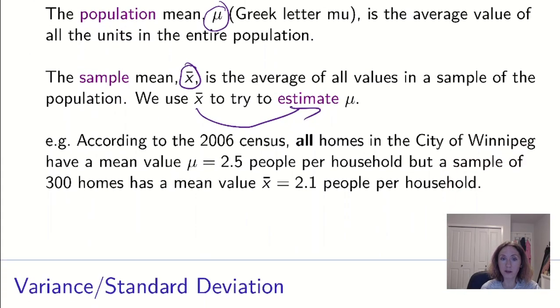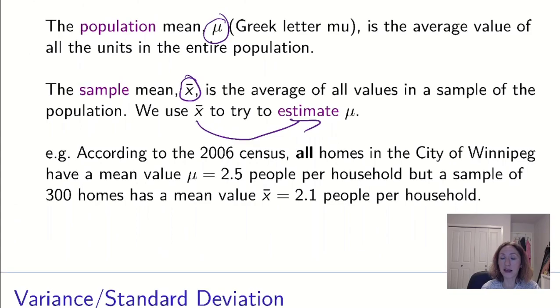If according to the 2006 census, all homes in the city of Winnipeg have a mean value of μ = 2.5 people per household, but a sample of 300 homes had a mean value of x̄ = 2.1 people per household, the x̄ is about the sample, the μ is about all homes because it was taken during a census. That's the idea we're coming with.